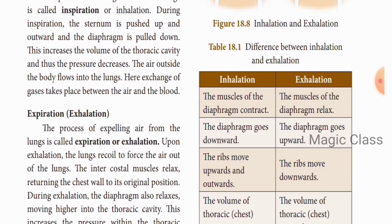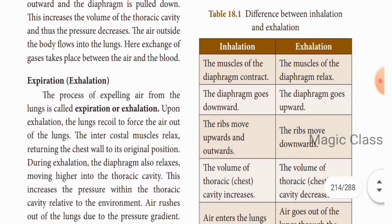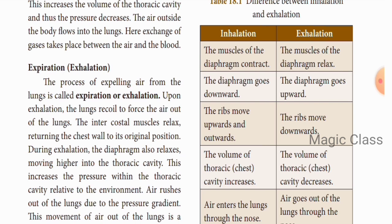The opposite process takes place during expiration. Expelling air from the lungs is called expiration or exhalation. The lungs recoil and force air out. The intercostal muscles relax, returning the chest wall to its original position. The diaphragm moves higher into the thoracic cavity. This increases the pressure within the lungs, and air rushes out along the pressure gradient. The movement of air out of the lungs is called a passive event.